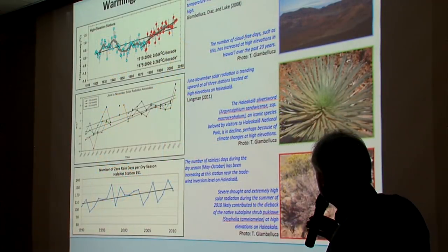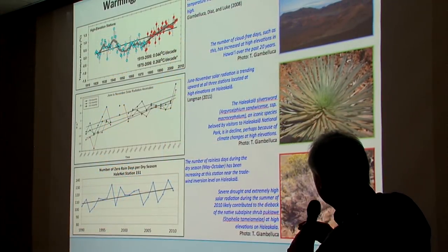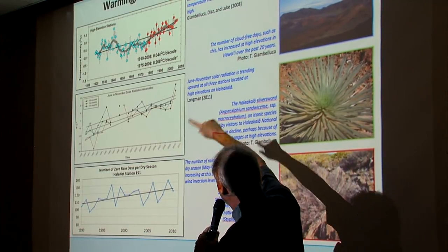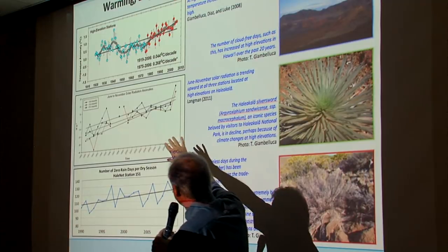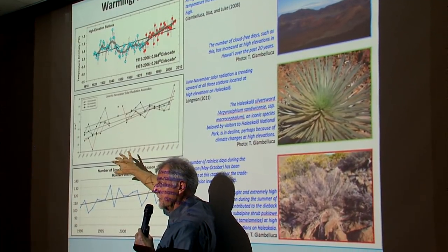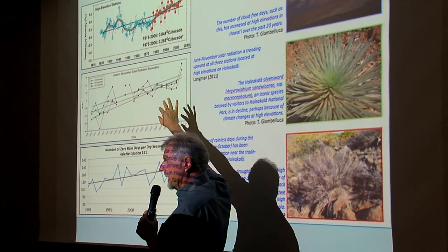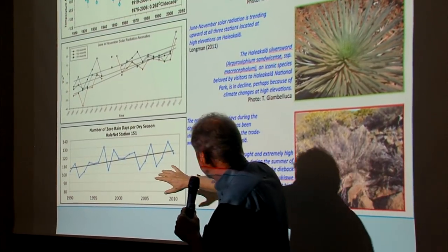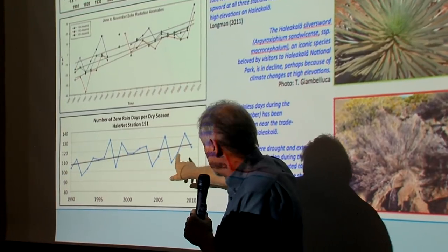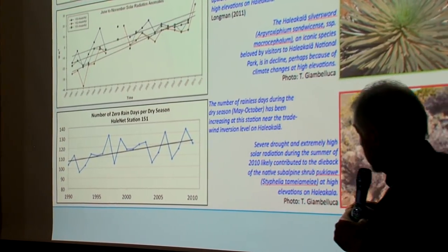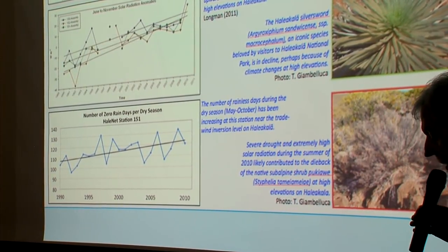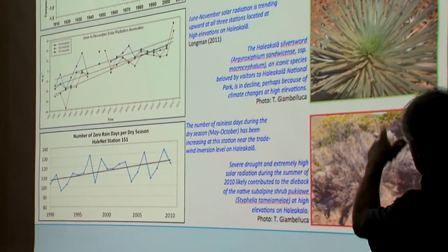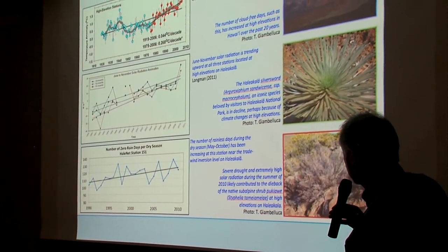One more observation slide from Tom Jambaluka: there's a warming trend in temperature at the top, solar radiation is going up — it's getting brighter — and the number of zero-rain days in the dry season is increasing, showing it's getting drier. These are observations, and they create real impacts on the ecology.